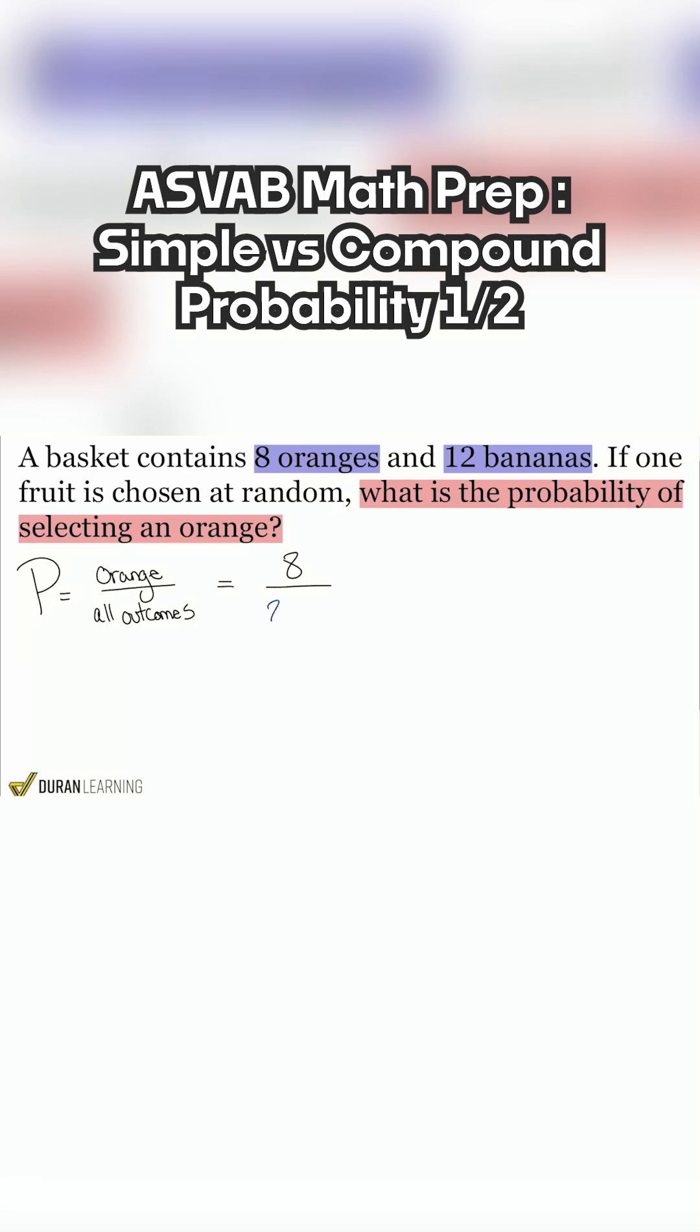Well, we'll add up all of those outcomes. We can choose from 8 oranges and from 12 bananas. That makes a total of 20. So here it's going to be 8 divided by 20. When we take a look at 8 over 20, that may not be an answer choice that's shown, even though it's correct.